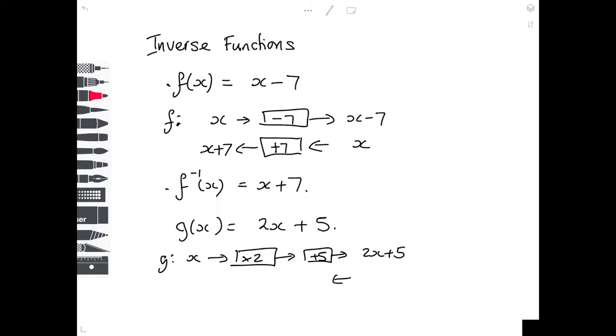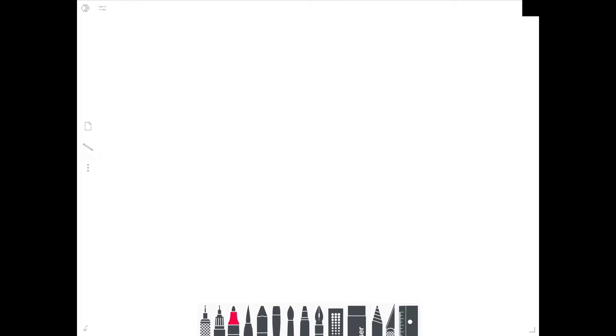Coming backwards, I'm going to start from this end. If I put a number in, the opposite of add 5 is take away 5. The opposite of multiply by 2 is divide by 2. So at the other end, I get X, take away 5, and divide everything by 2. So my inverse function is X, take away 5, divide by 2. So how would this work as a question?